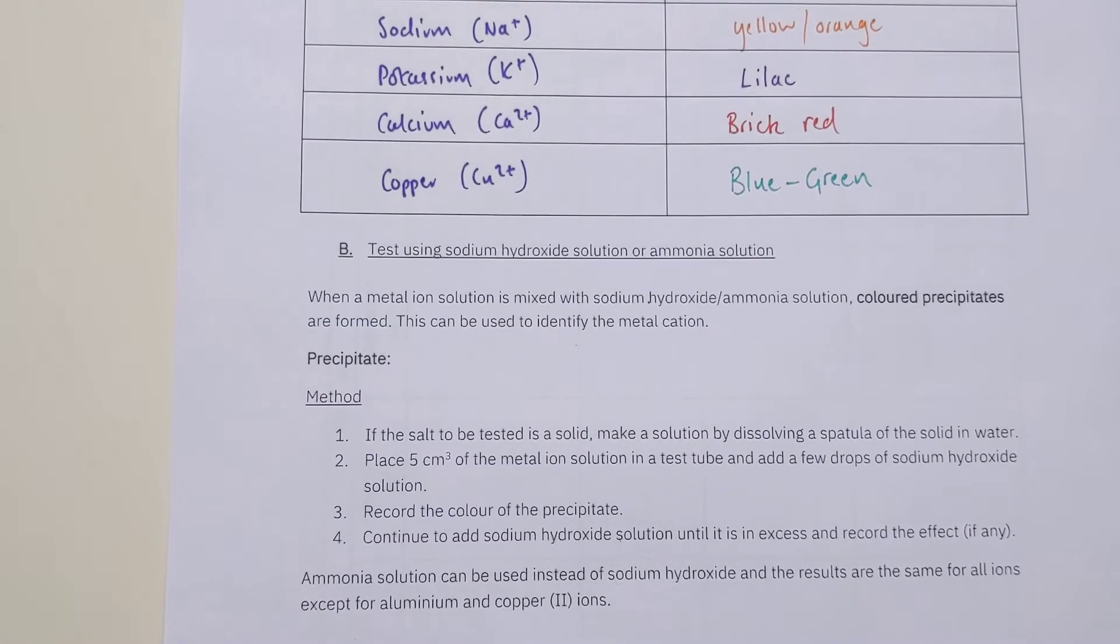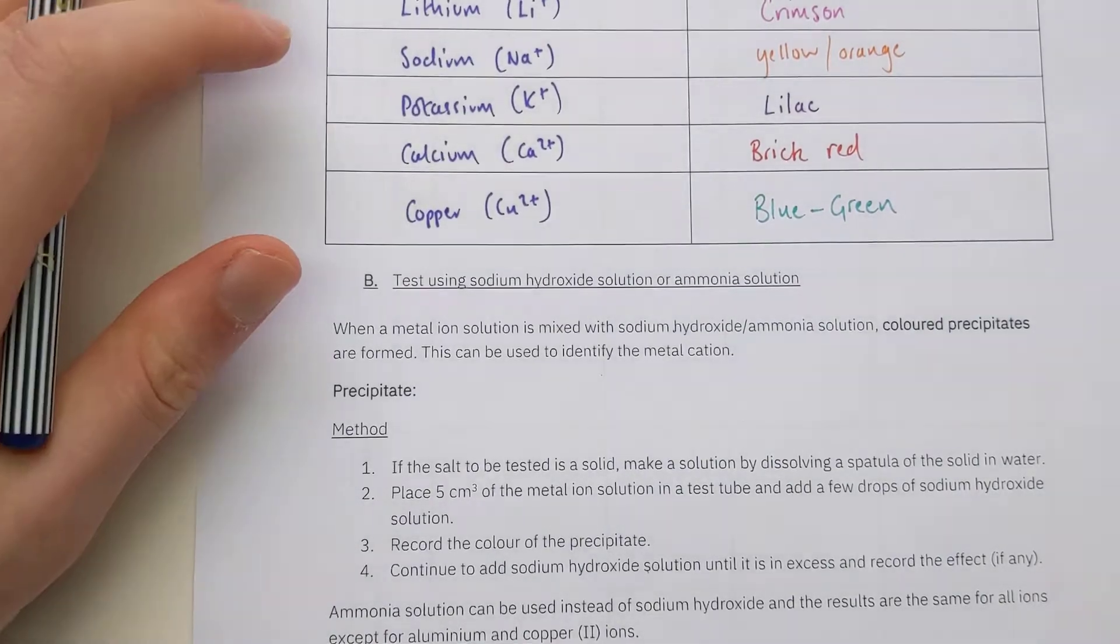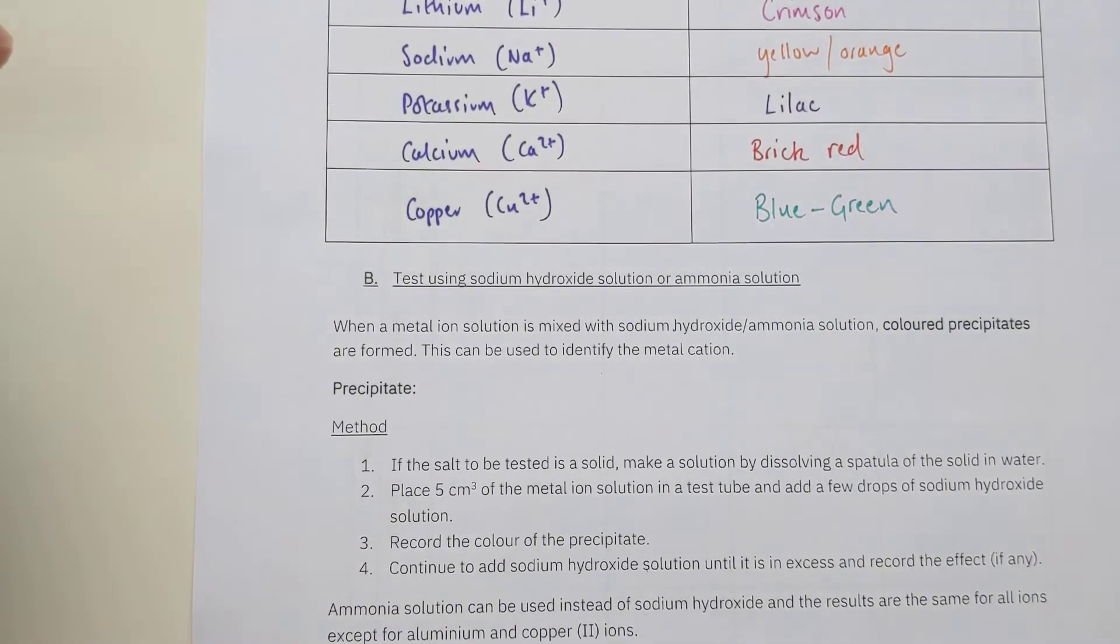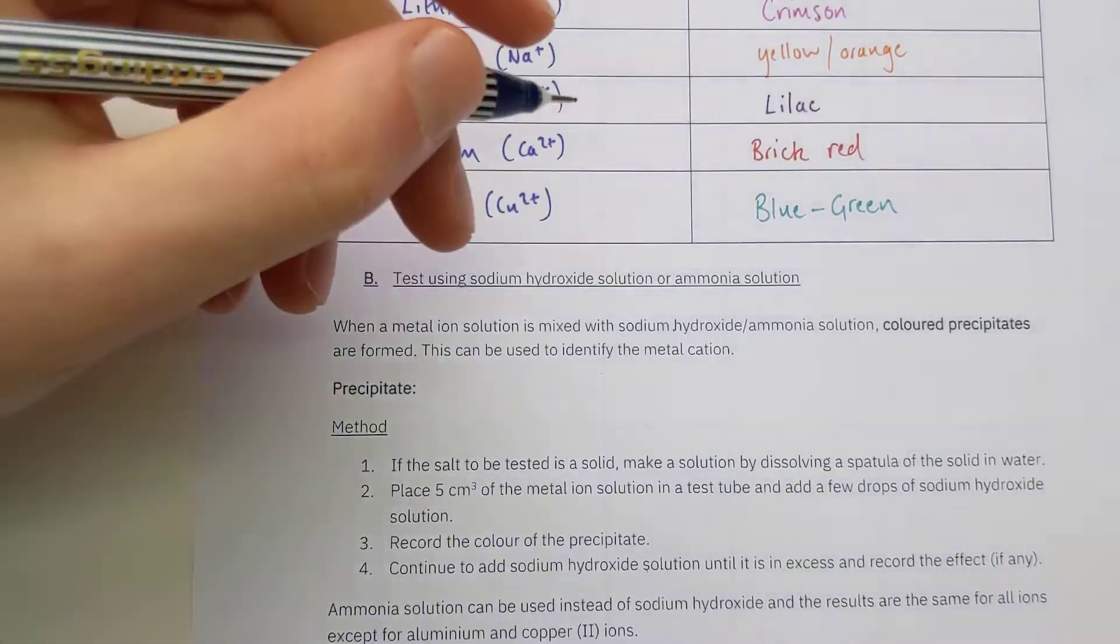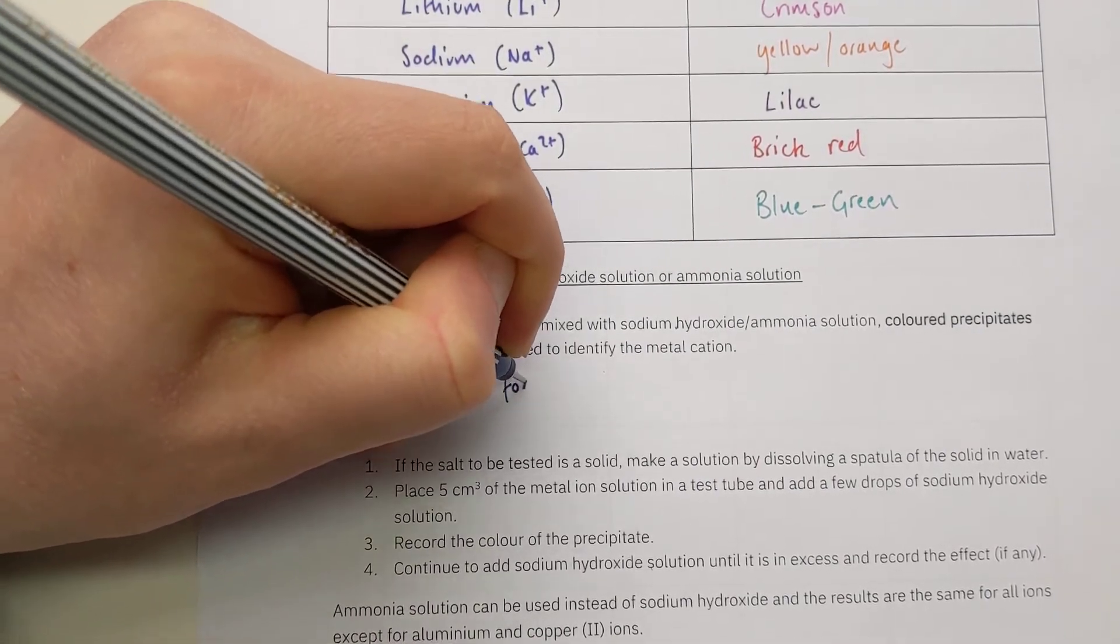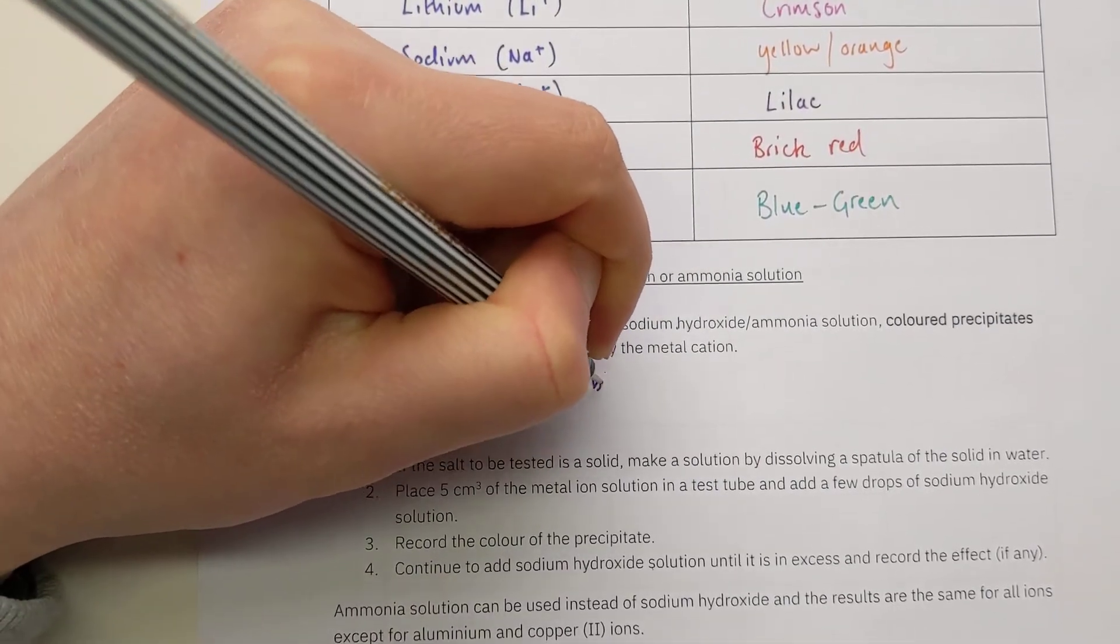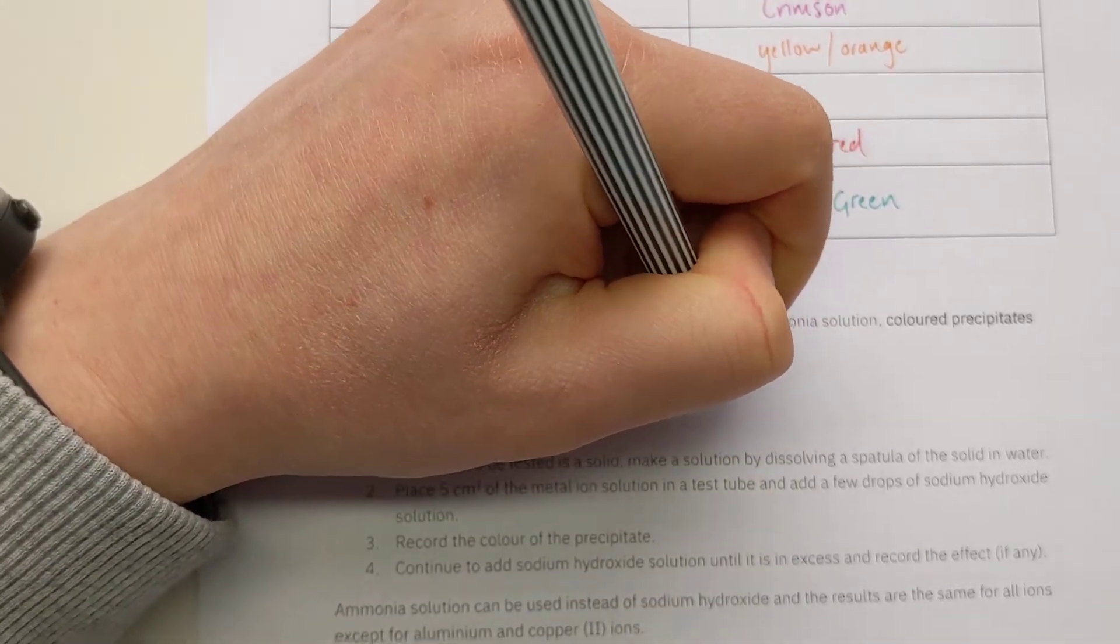How this test works is for different metal ions or cations, I'll get different types of precipitate, different colors or different behavior precipitates depending on the ion. I can tell them apart from each other and work out what the metal was in the first place. When a metal ion solution is mixed with sodium hydroxide or ammonia, colored precipitates are formed. A precipitate is a solid formed by mixing two solutions.